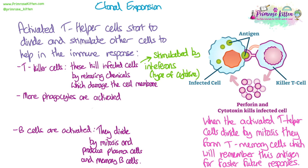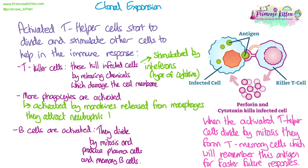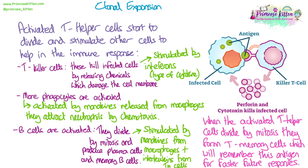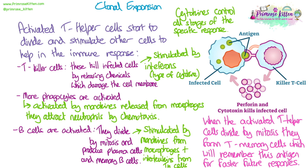T killer cells are stimulated by cytokines called interferons, which attract them to where they need to be. More phagocytes are activated by monokines — a type of cytokine released from macrophages — which attract neutrophils by chemotaxis to the cells they need to engulf. Monokines also stimulate B cells to differentiate into plasma cells and memory cells. So both macrophages and T helper cells produce cytokines causing B cells to rapidly divide by mitosis and differentiate, controlling the stages of clonal expansion.